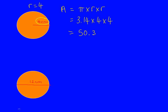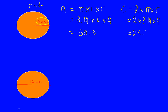That's the area of that circle. If the question wanted the circumference, we pretty much do the same except we use the other formula, which is 2 times pi times r. Put in our numbers: 2 times 3.14 times the radius, which is 4. When you type all of that into a calculator, you get the answer of 25.1.